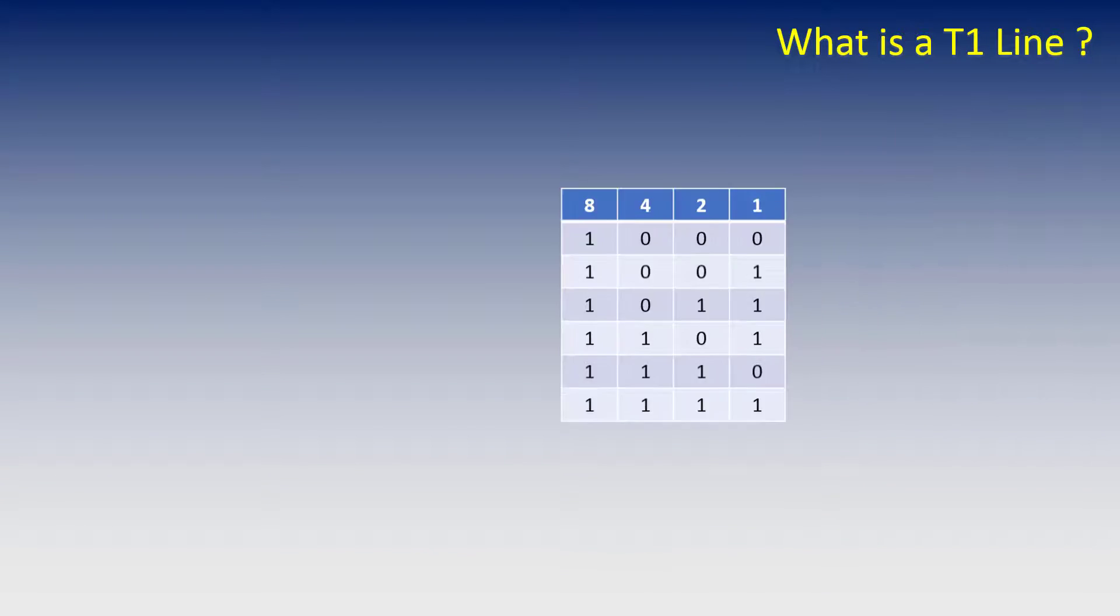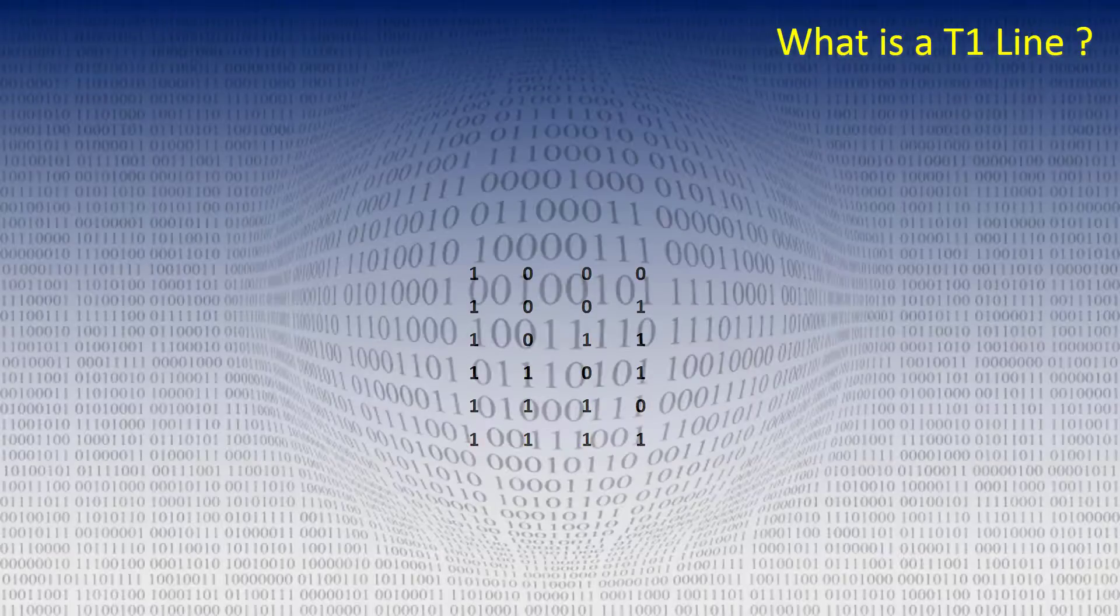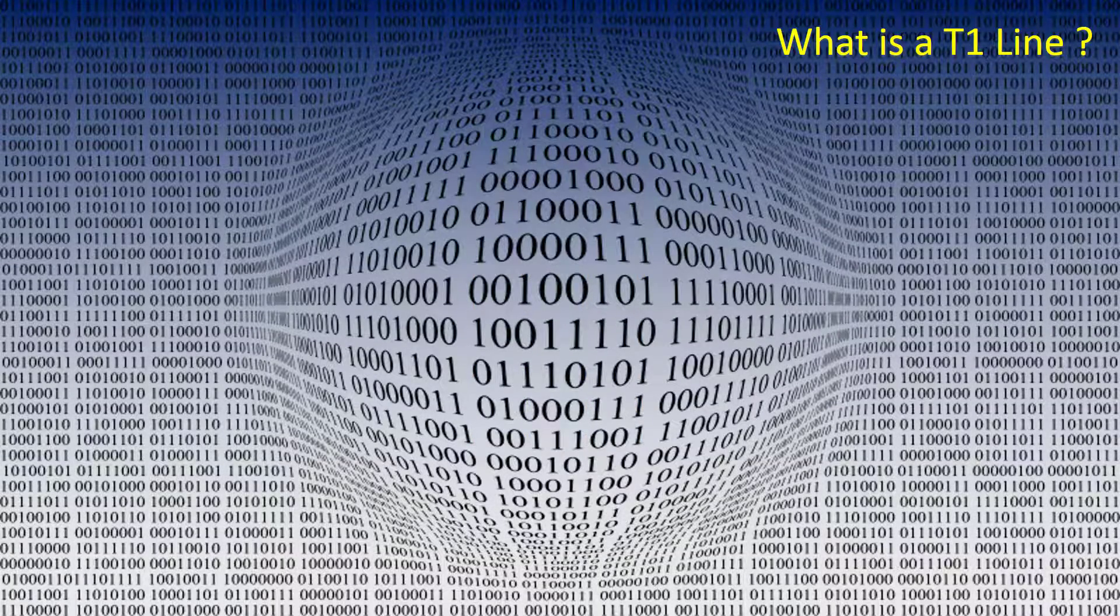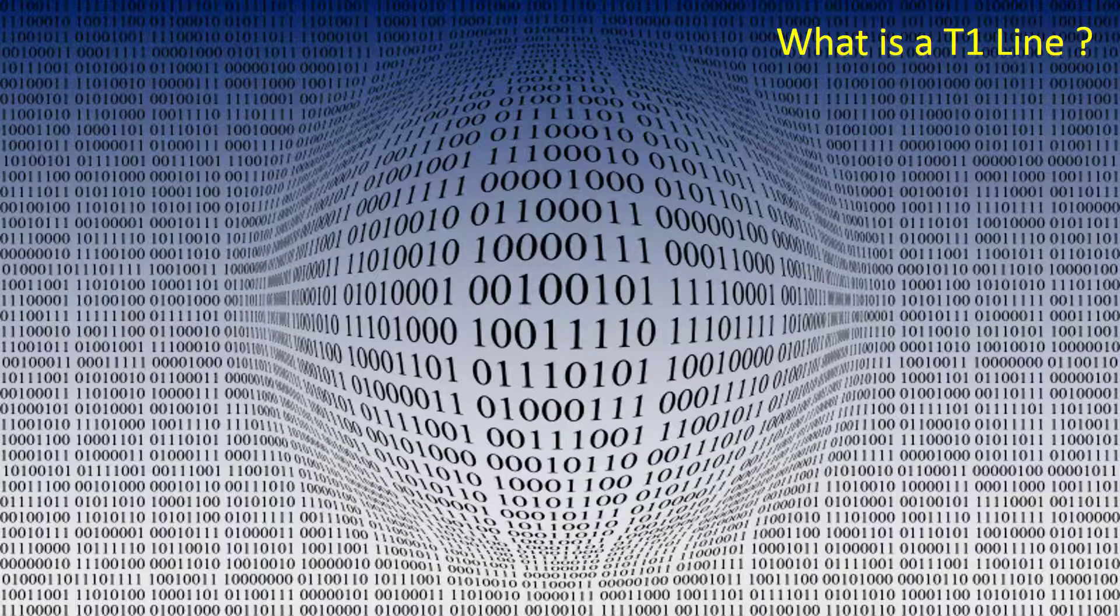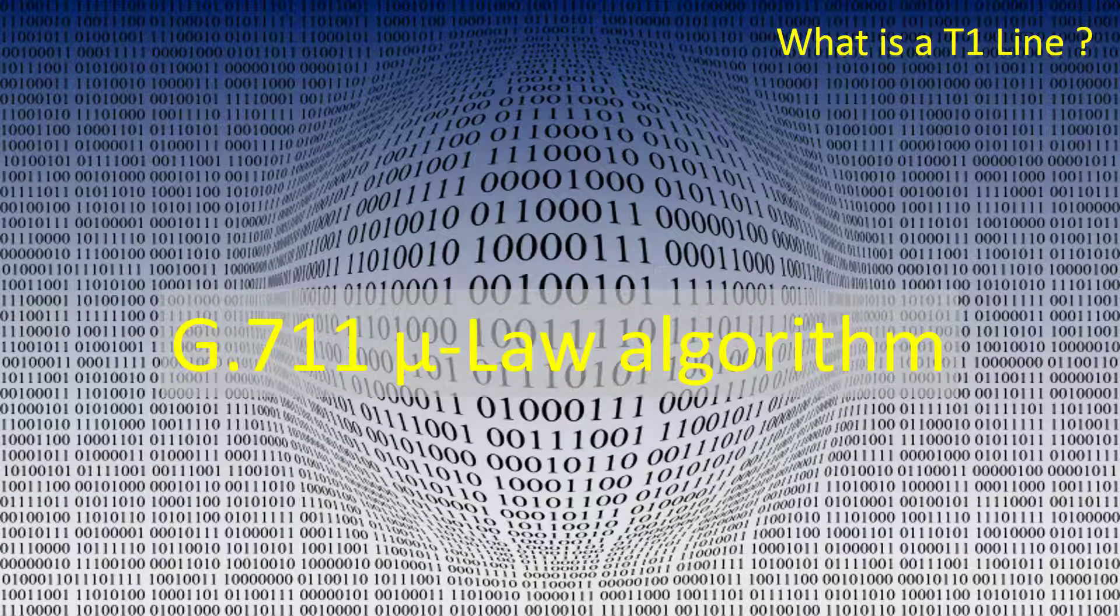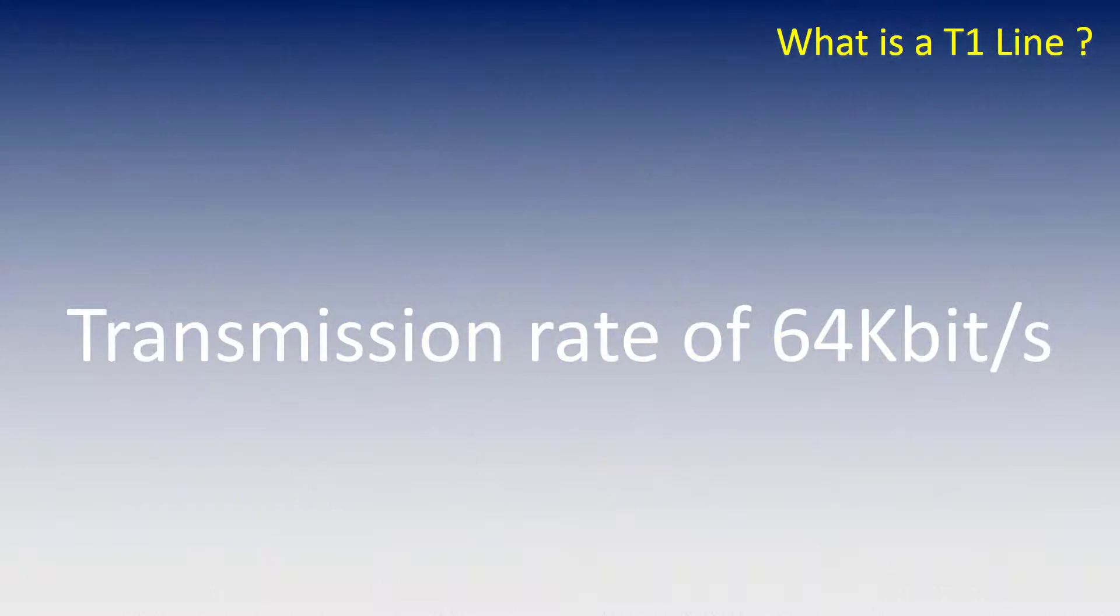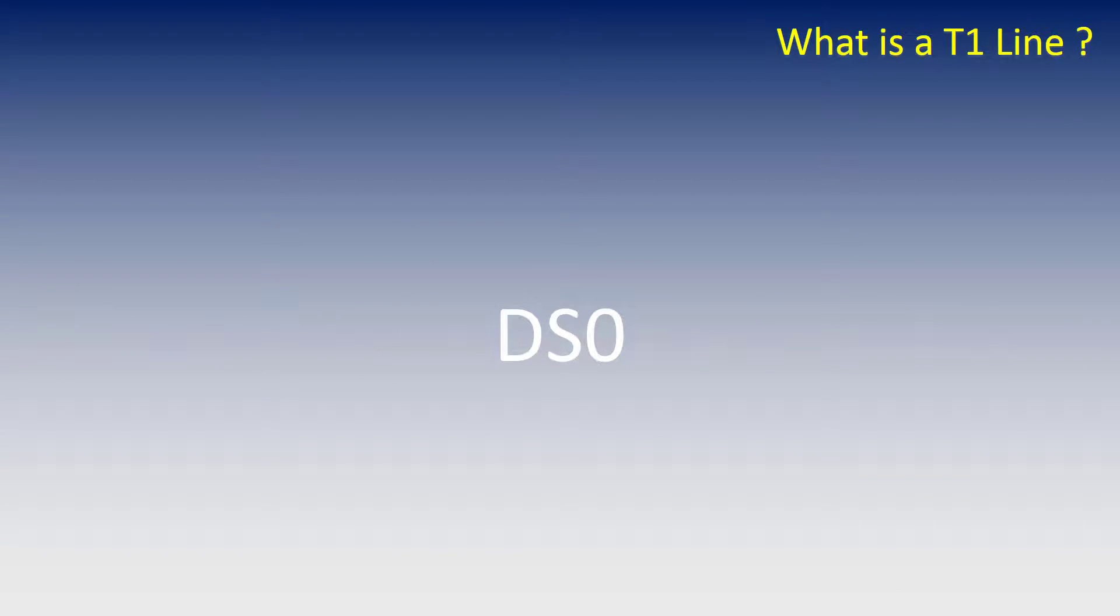These 8-bit binary values provide 256 different levels of the analog signal. Remember, this is done 8,000 times per second. The analog spectrum is mapped using the G711 MU law algorithm. Once digitized, these 8-bit binaries are then transmitted at a rate of 64 kilobits per second, which is called a DS0, which means digital signal zero.